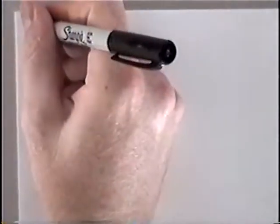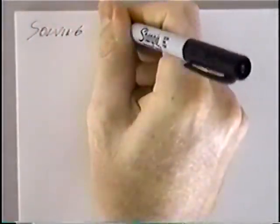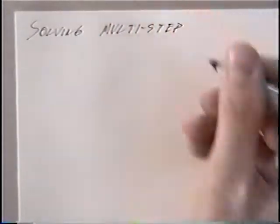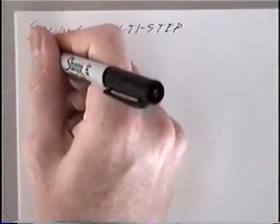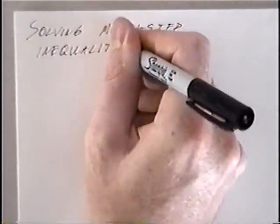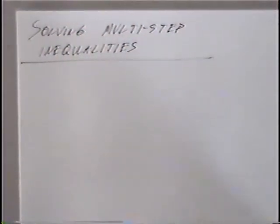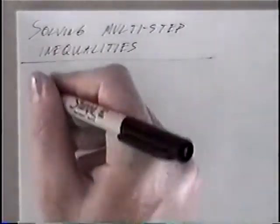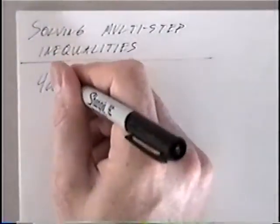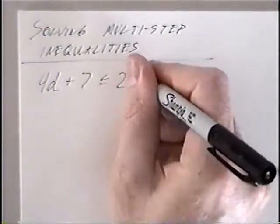The title of the first section is Solving Multi-Step Inequalities. The first problem is 4d plus 7 less than or equal to 23.